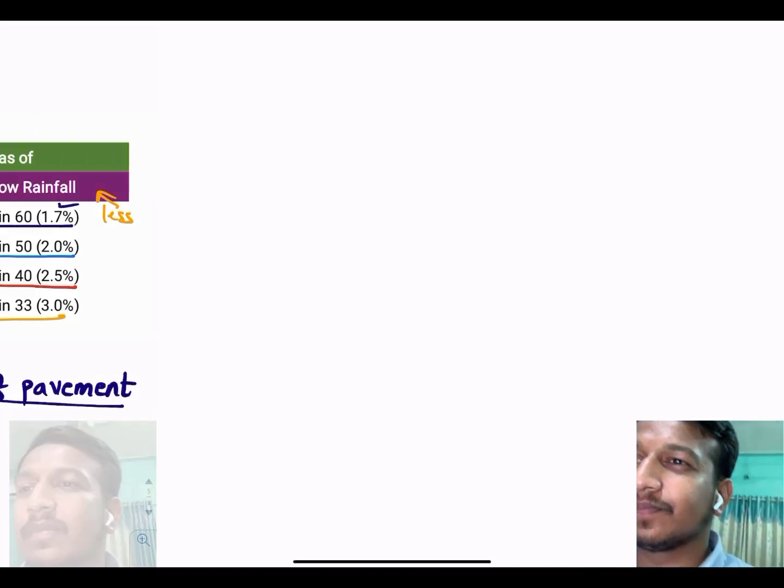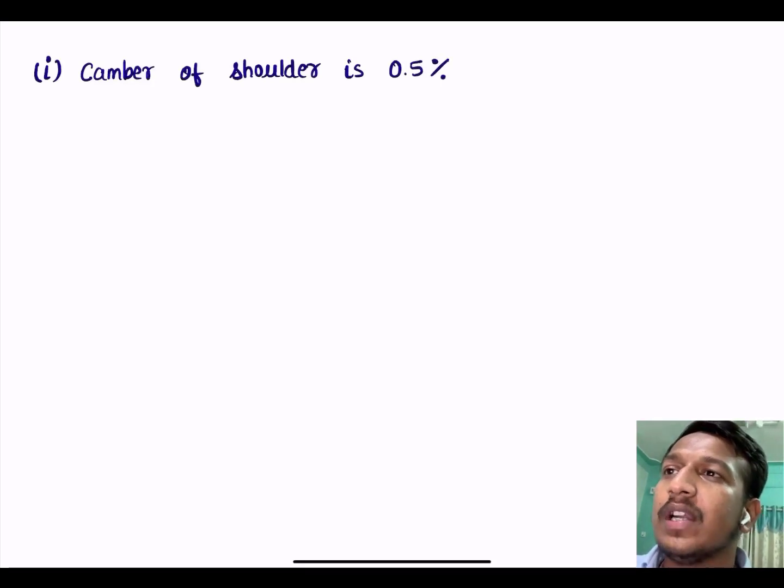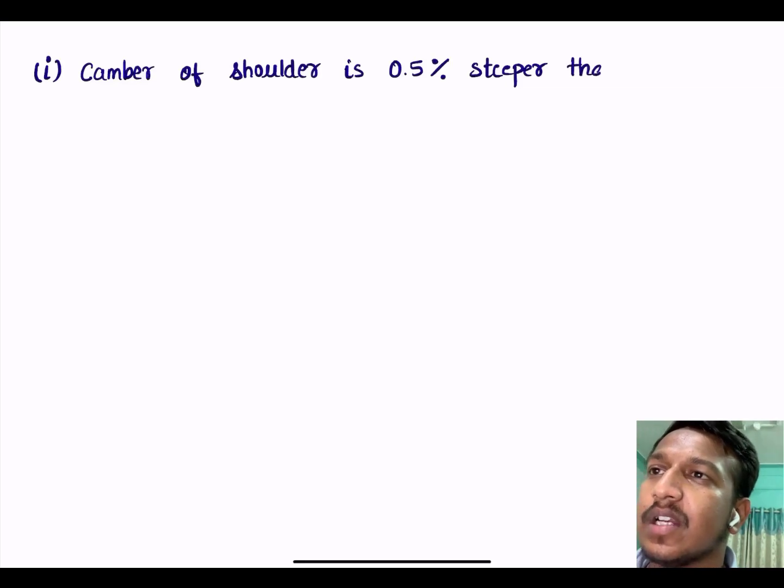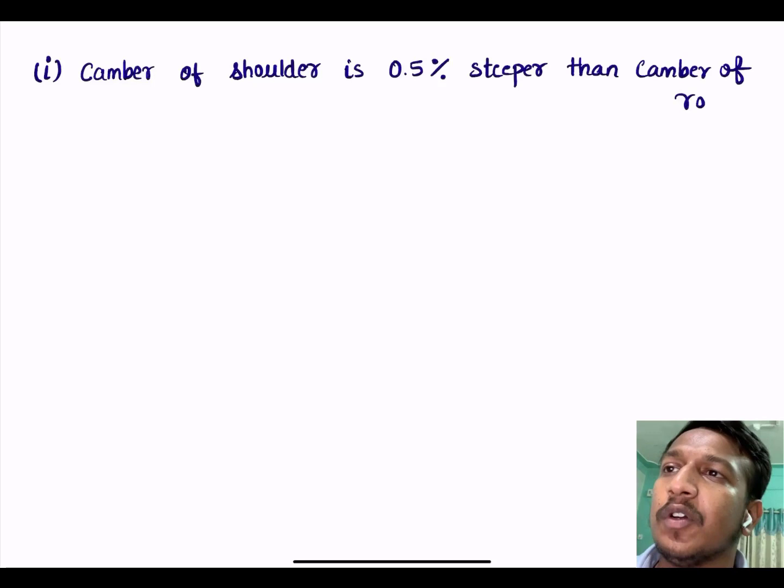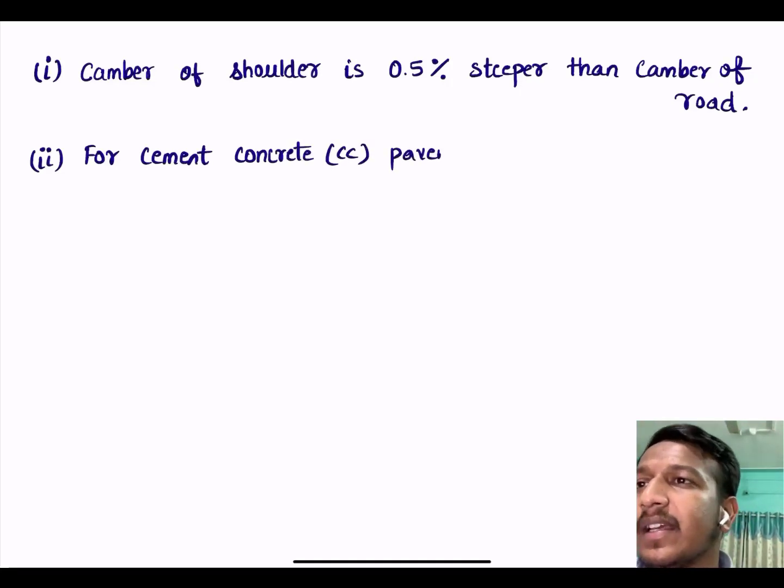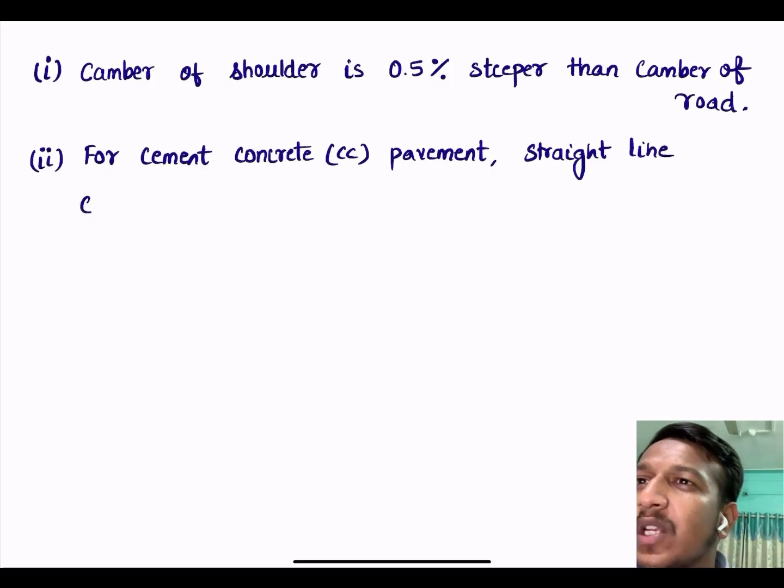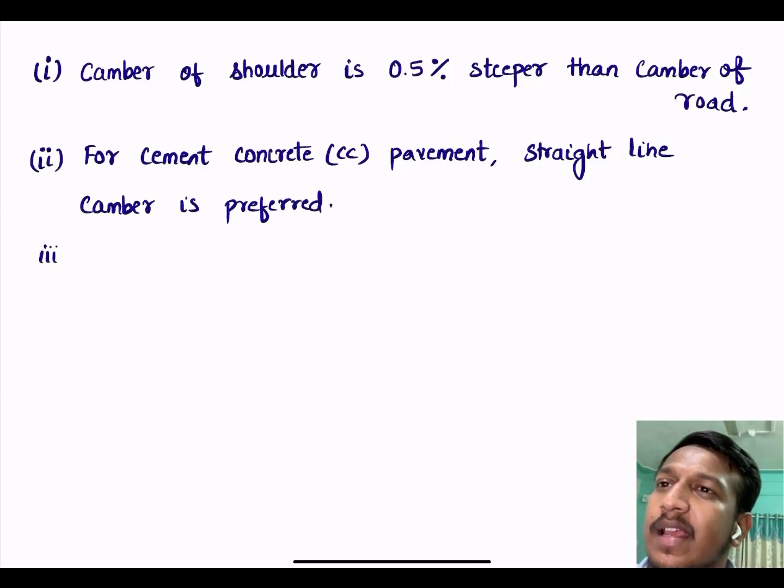Few additional things you need to remember about camber. First is camber of shoulder is 0.5% steeper than camber of the road. Reason is the shoulder quality is not as good as the road. Second is for cement concrete CC pavement, straight line camber is preferred.